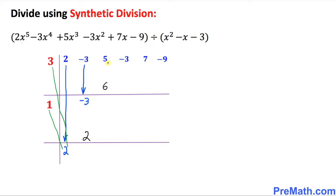Let's add these numbers now. Negative 3 plus 2 is going to be negative 1. Likewise, 5 plus 6 is going to be 11.